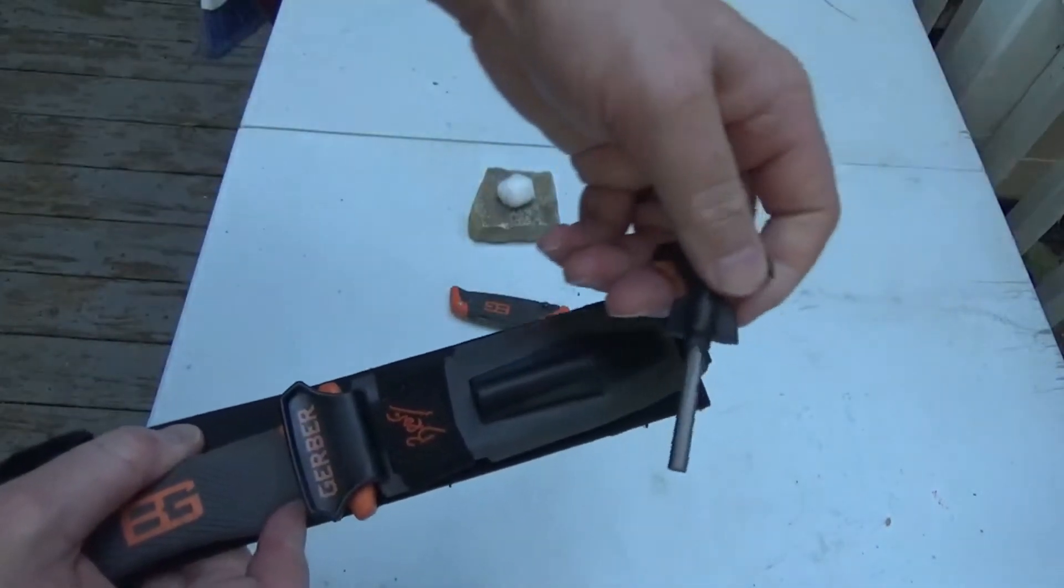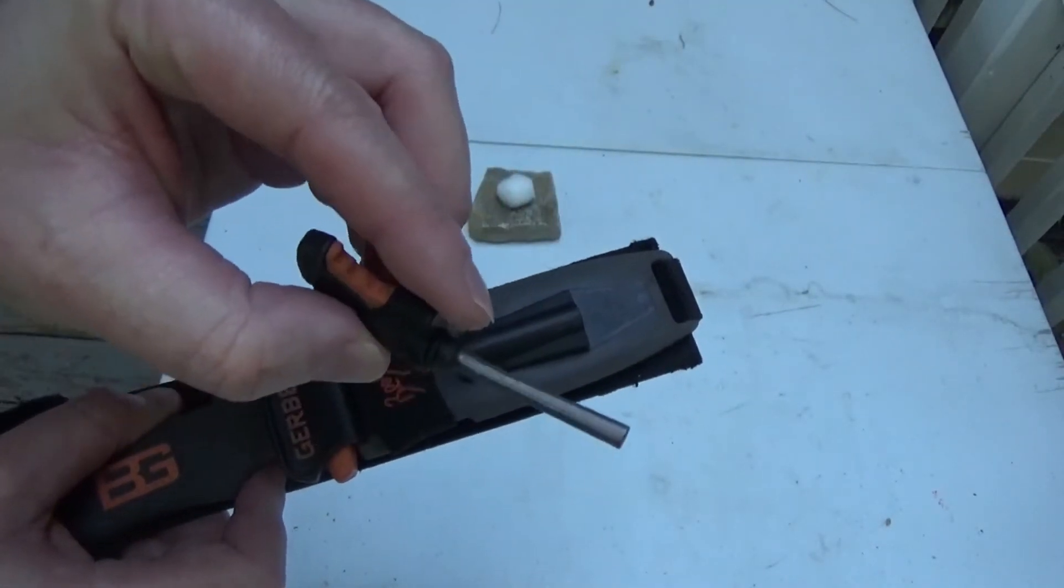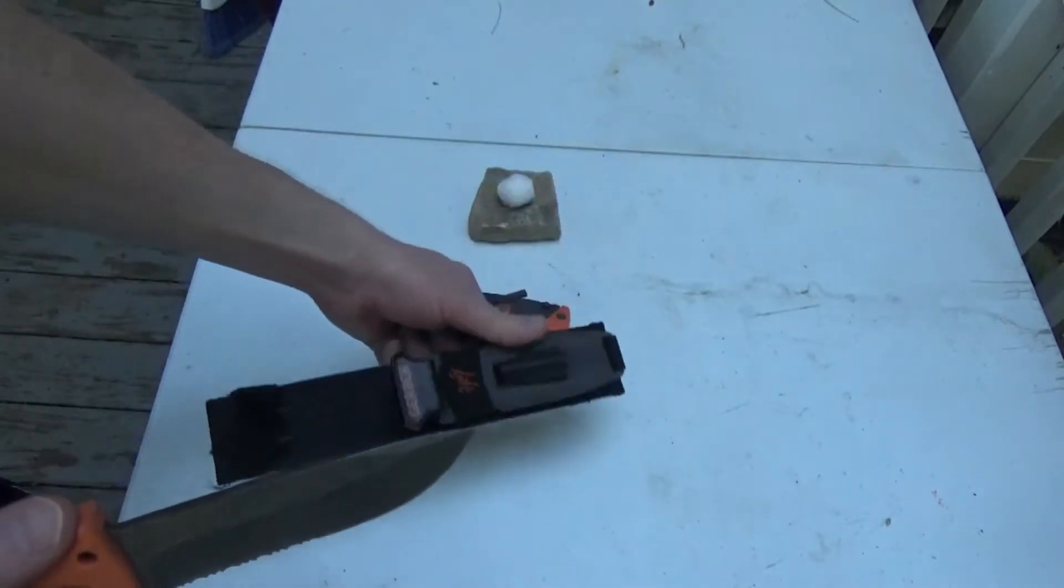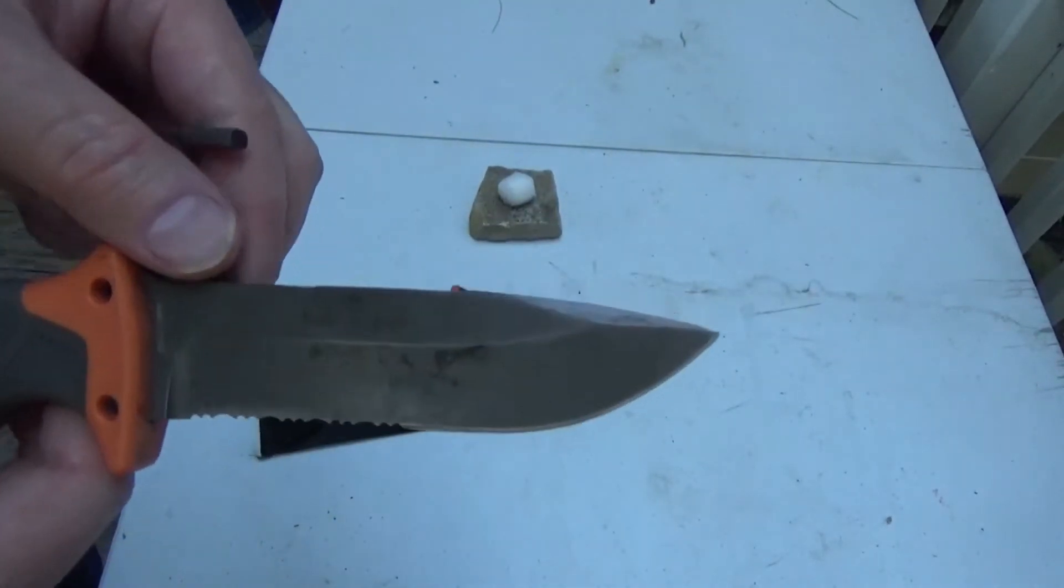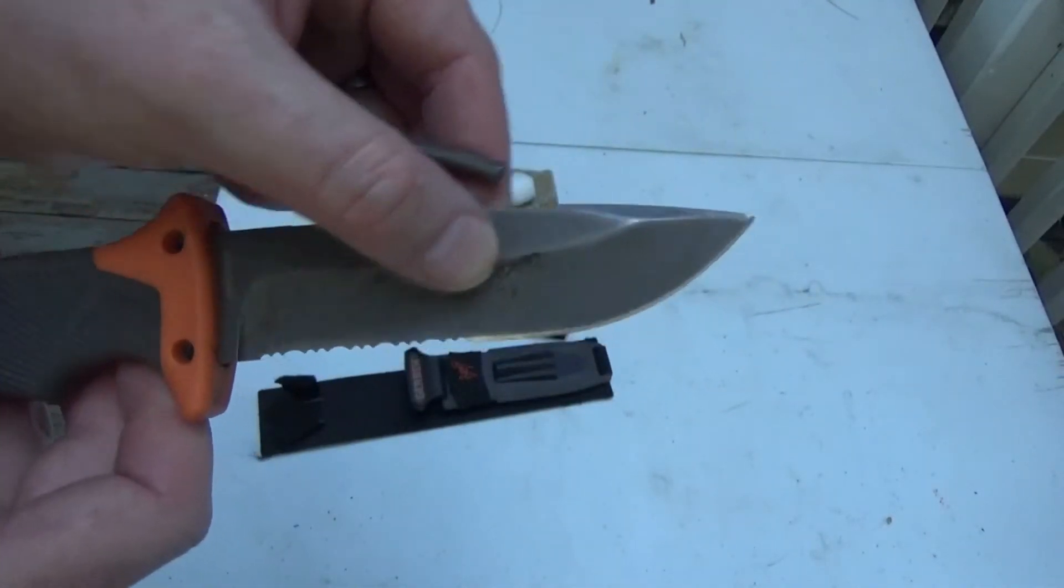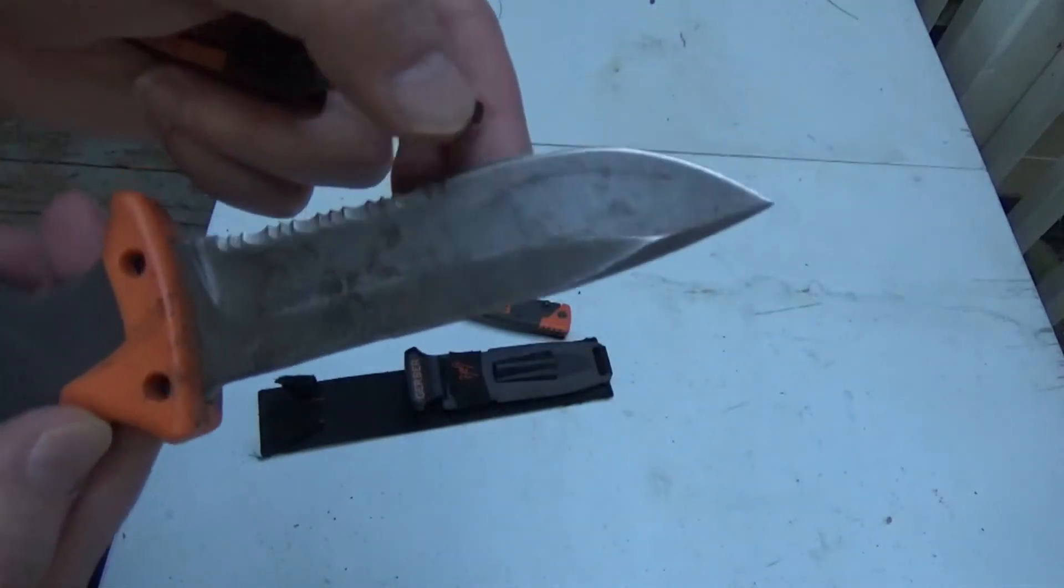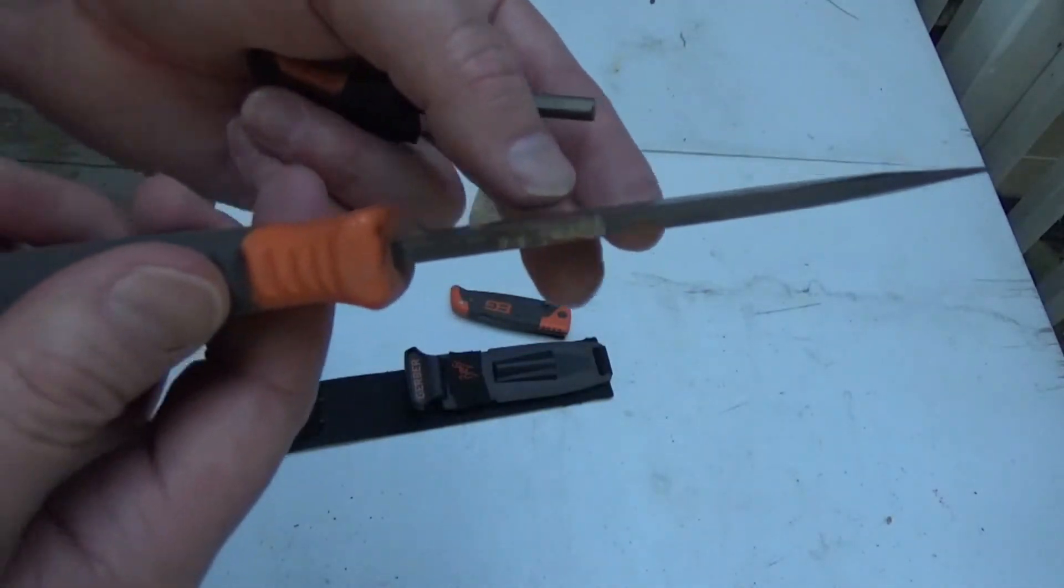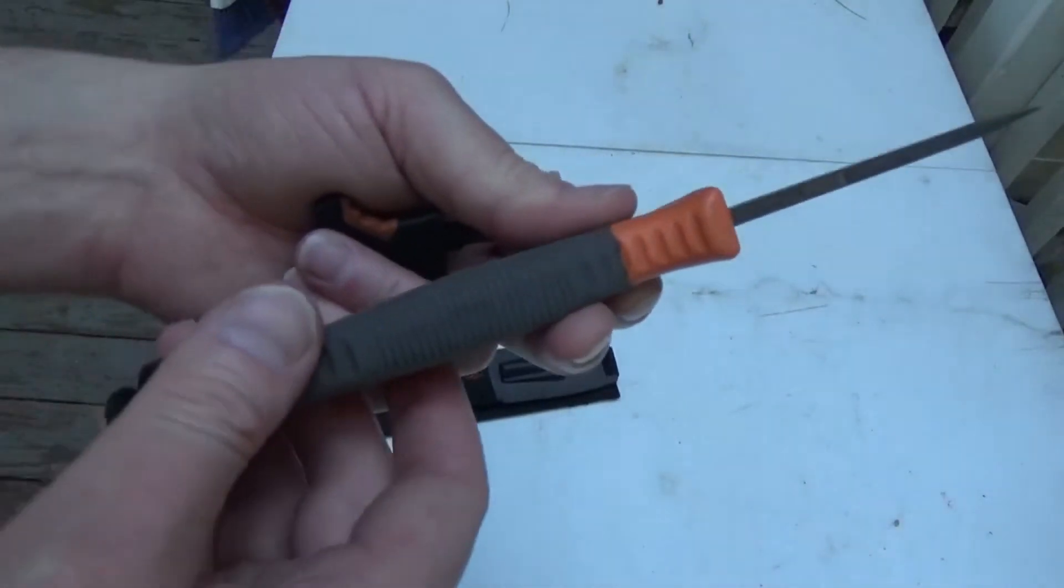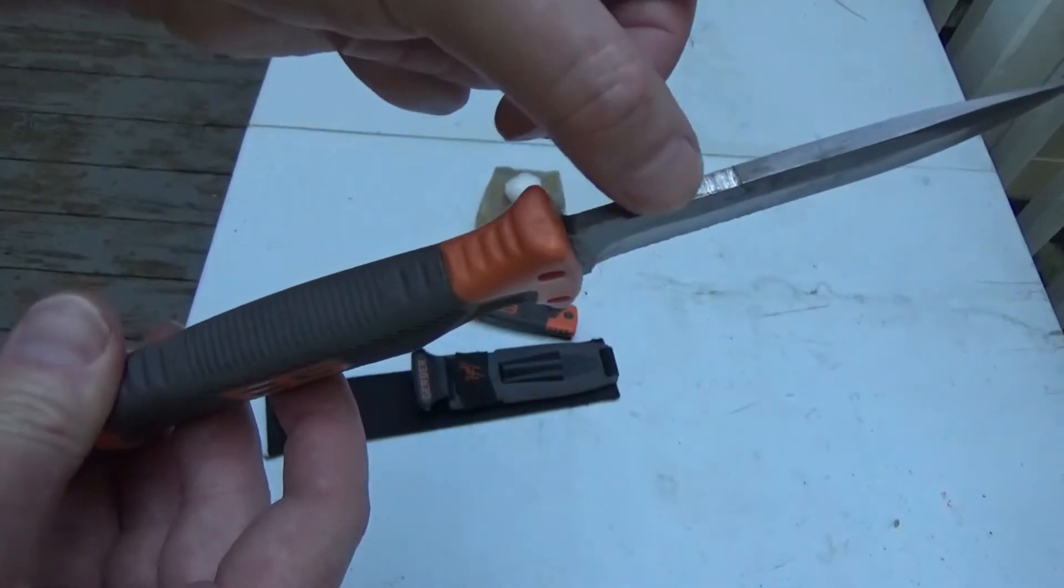It comes with a built-in ferro rod and you can see I have used it quite a bit. But I want to show something really interesting. It has the same kind of dark colored outer layer. I don't know if that's a coating or the way it's processed or whatever, but if you look closely right here, see if I can get in the camera here.